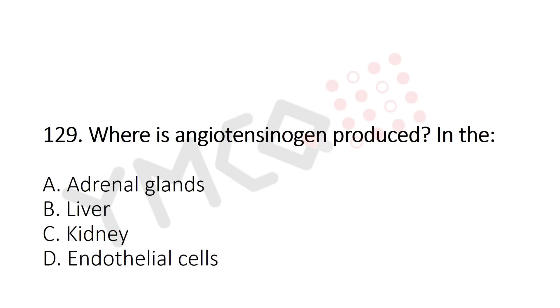Now Question 129: Where is angiotensinogen produced? Option A: adrenal gland, Option B: liver, Option C: kidney, Option D: endothelial cells. The answer is Option B: liver.